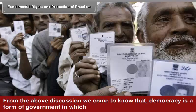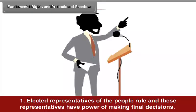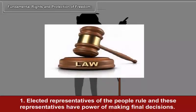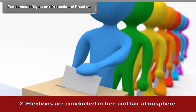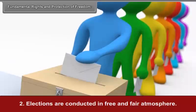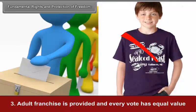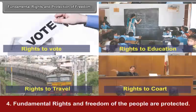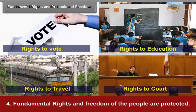From the above discussion, we come to know that democracy is a form of government in which: first, elected representatives of the people rule and these representatives have the power of making final decisions; second, elections are conducted in a free and fair atmosphere; third, adult franchise is provided and every vote has equal value; and fourth, fundamental rights and freedom of the people are protected.